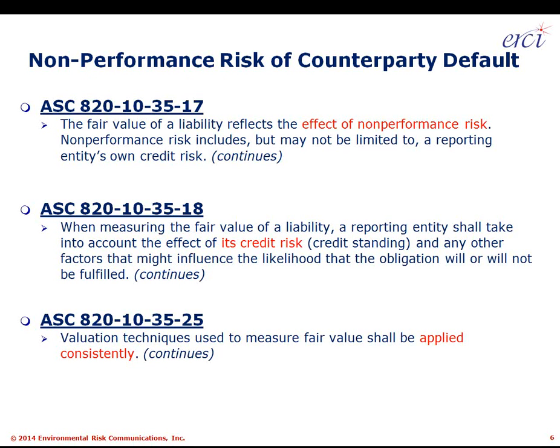Other relevant citations are found in ASC 820. ASC 820-10-35-17 states that the fair value of a liability reflects the effect of non-performance risk. In other words, estimating a liability on the books requires an entity to discount it or add a premium — sometimes both — where the liability needs to reflect the non-performance risk of other parties.